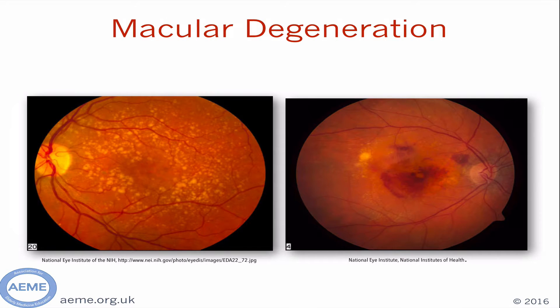Moving more posteriorly, these slides demonstrate a very common problem of macular degeneration, which is age-related and therefore very common in our older patient population. The picture on the left shows dry age-related macular degeneration with scattered yellow drusen, and the slide on the right shows wet macular degeneration with bleeding in the macular area, which will have caused a significant and sudden drop in vision. It is important to distinguish between these two forms, as wet AMD is treatable but dry is not, and the urgency of referral will be different for each.